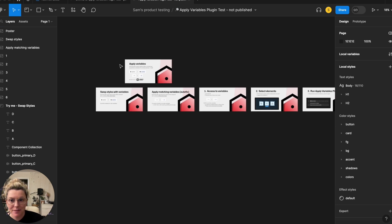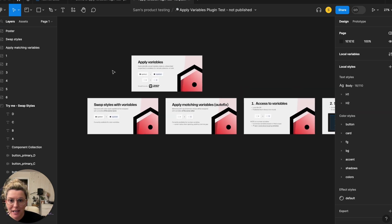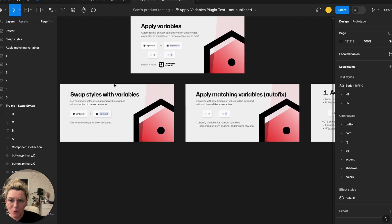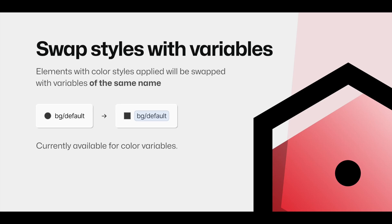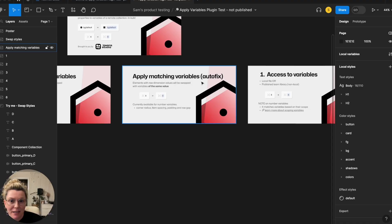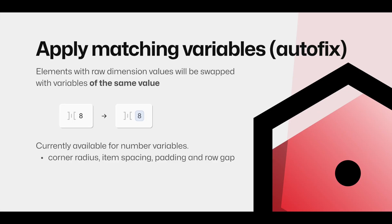There are two main options. First, you can swap styles with variables — if you have elements on your page that have styles and now you want them to be variables, in one click you can do it all at the same time in bulk, as long as the names are the same.